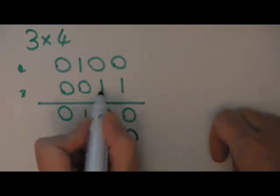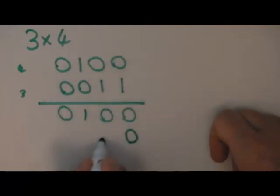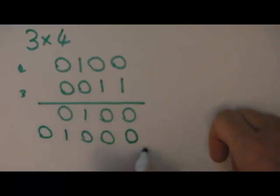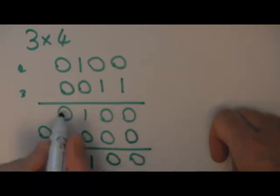We have our leading 0, and it's 1 times 0, 1 times 0, 1 times 1, 1 times 0, and once again we're going to add these two rows together.